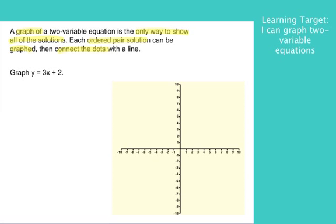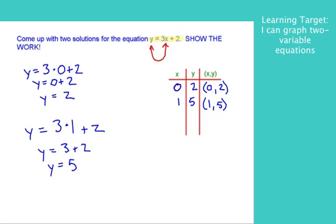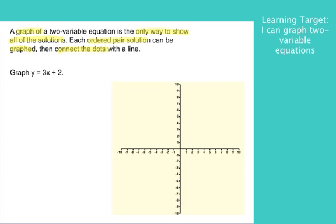If you look up above here, we did that as our second example. I came up with 0, 2, and 1, 5 as ordered pairs. I'm going to go ahead and put those into, I'm going to copy that table of solutions right here.